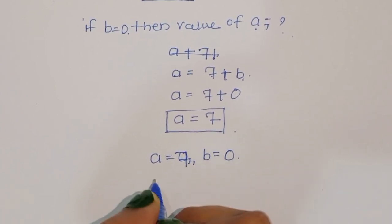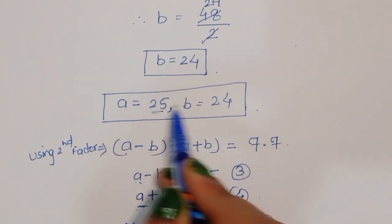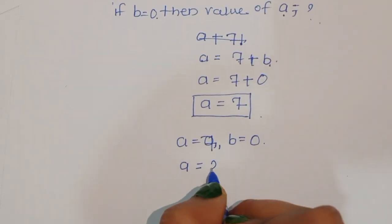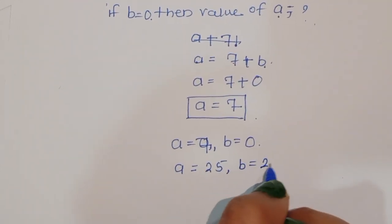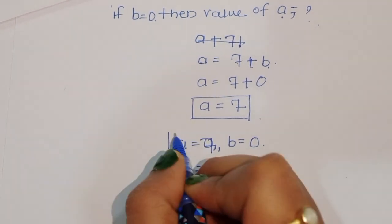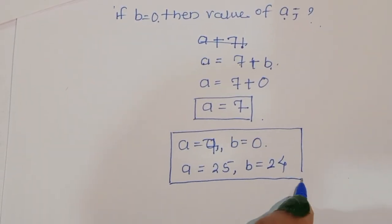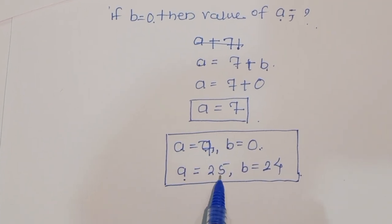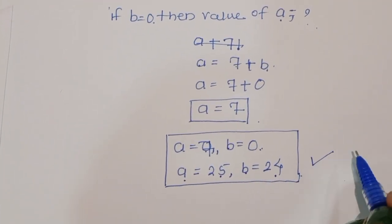So we have two solutions here. The first solution is a equals 25 and b equals 24, from the first factor. The second solution is a equals 7 and b equals 0, from the second factor. These are the two solutions.